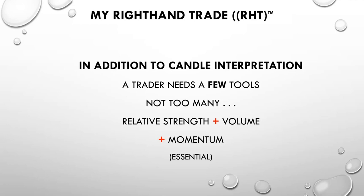From getting intimate with maybe 35 indicators, I've learned that only about four or five are worthy of your attention. One of them is relative strength. Another is volume — if you don't know what's going on with volume, you don't know anything. You're just trading in the dark.